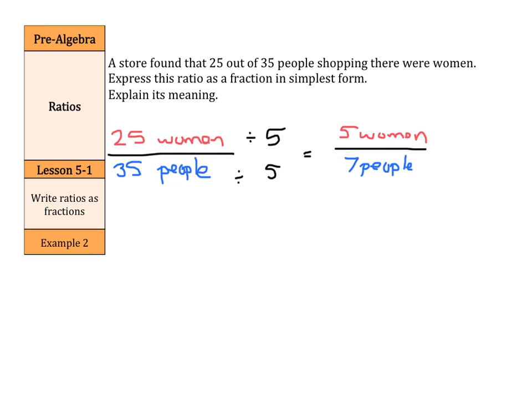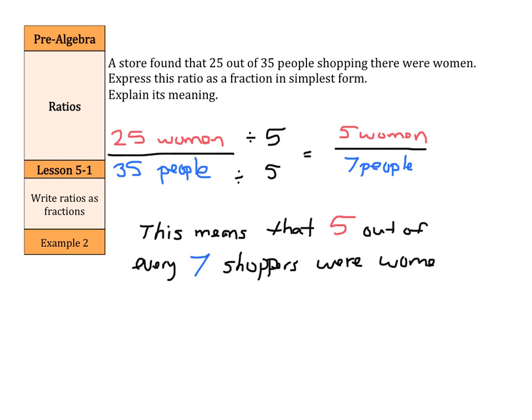And to explain its meaning, we can write: this means that five out of every seven shoppers were women. So we start out with the 25 out of 35, write it in simplest form, and explain it by saying this means that five out of every seven shoppers were, in this case, women.